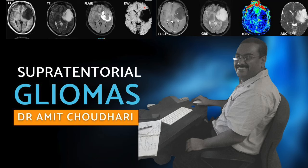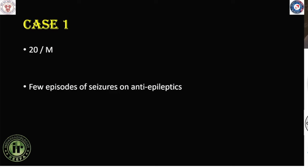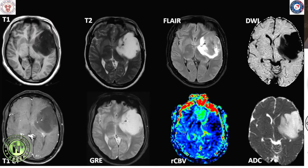This will be a case-based approach towards supratentorial gliomas. Case 1 was a 20-year-old gentleman who had presented with few episodes of seizures and had been on anti-epileptics, and these are the images.